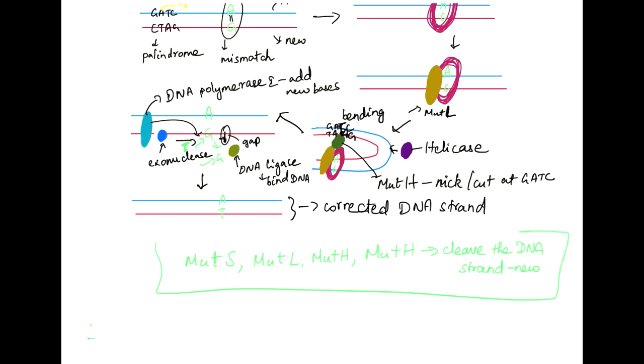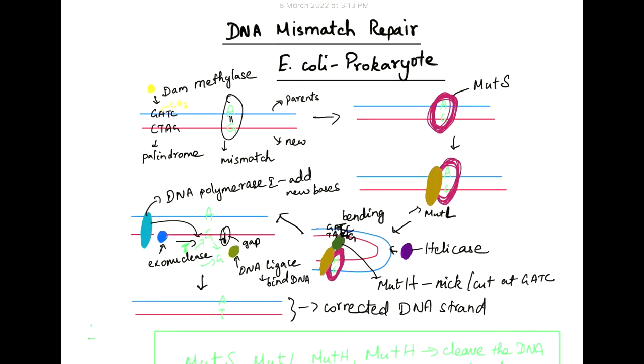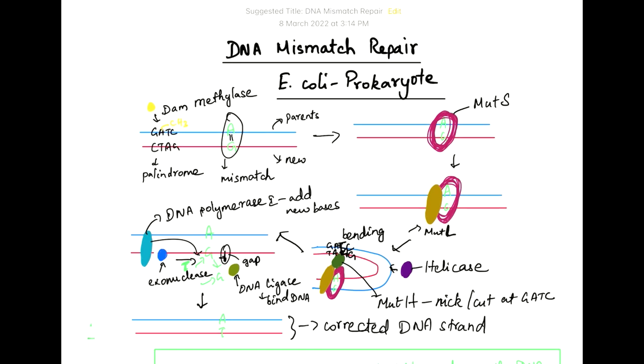So this is the order in which proteins are recruited during mismatch repair of DNA in E. coli.